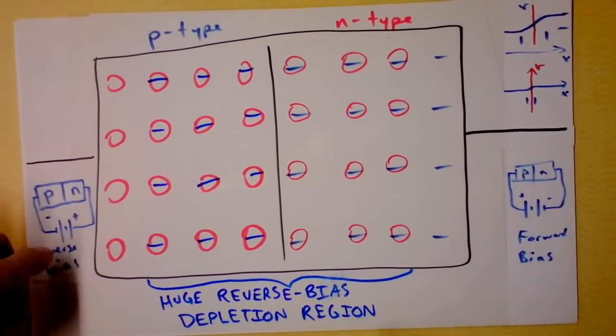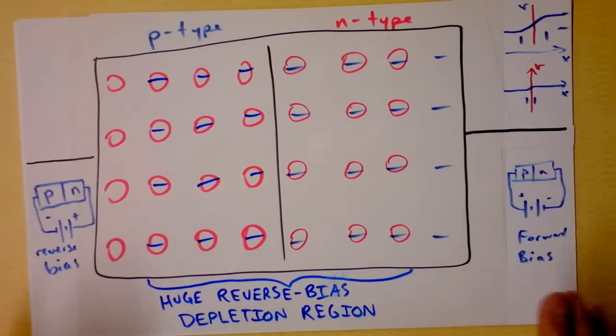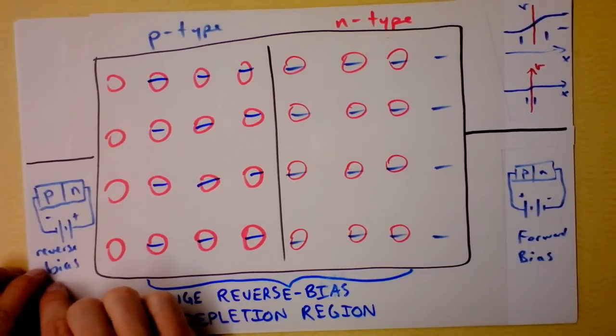It will not allow current to go if you're reversed bias, and it will if you're forward bias. And to summarize all of this, like we've increased the voltage barrier dramatically here.